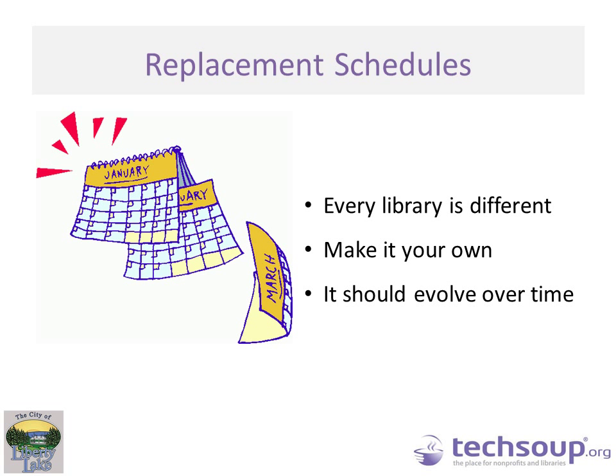Replacement schedules are something every single library is going to handle differently. The biggest thing is it's going to come down to budget and need, so make your schedule your own. Communicate with other libraries and get ideas, but then make it for your own library because they could have a totally different budget or direction. Don't be afraid to make it evolve over time — most libraries' budgets increase, and technology is only going to get bigger. Audit it every year and don't be afraid to reach for the stars.